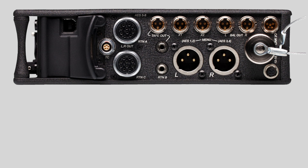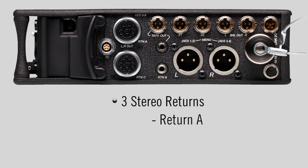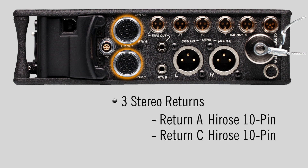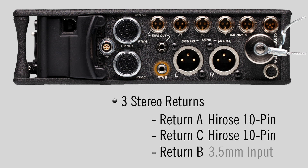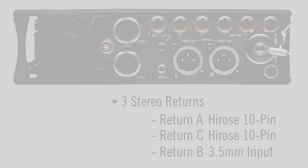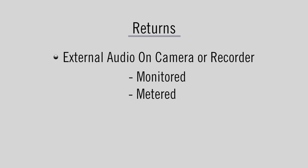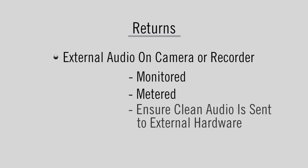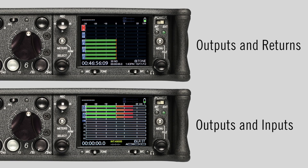The 664 also has three stereo returns. Return A and C are on the Hirose 10-pin connectors. Return B is on its own 3.5mm unbalanced input. Through these return paths, audio being recorded on a camera or external recorder can be monitored and metered. This ensures that good, clean audio is sent to connected hardware. Each of the return meters can be found on the LCD and viewable in two modes.